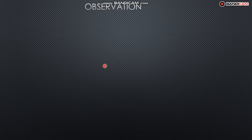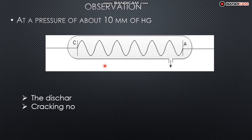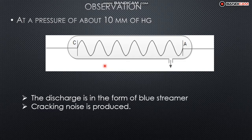Starting with a pressure of about 20 mmHg, we make observations. When we have a pressure of 10 mmHg, we can see the discharge. The discharge appears in the form of blue streamers — luminous streaks from the cathode. The discharge is in the form of blue streamers or luminous streaks, like a sparkling dash pattern.